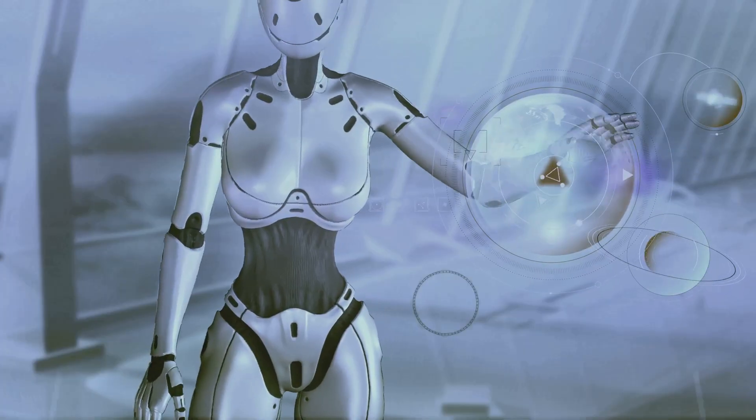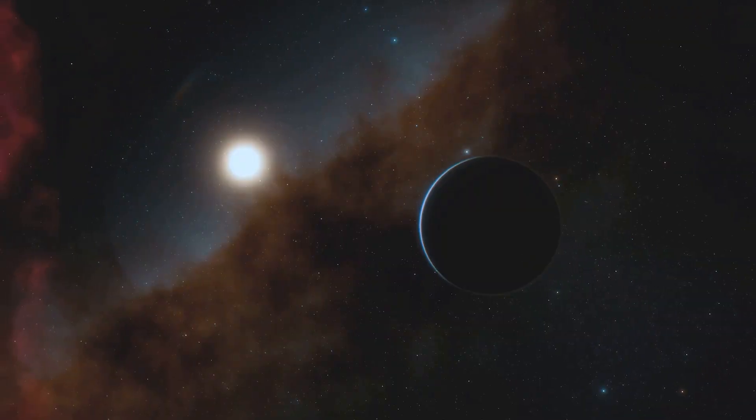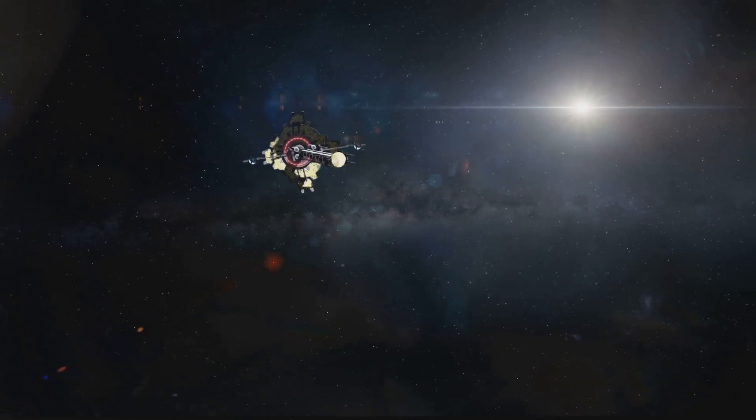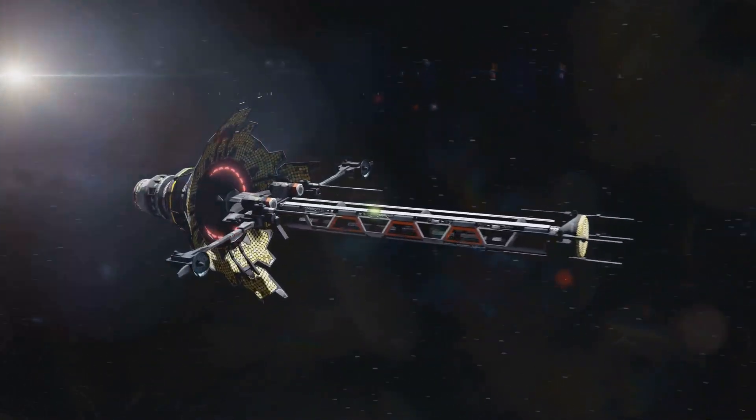Of course, there's the robotic route. Send probes first. Autonomous AI-powered scouts that can prep the system, scan planets, even build infrastructure. Let them take the risks so humans can follow later.